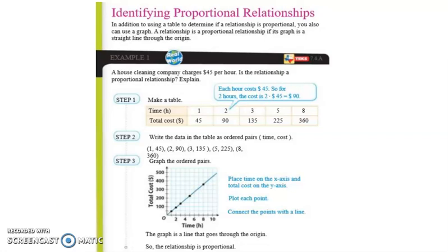Now, 7.4a talks about how we can represent a constant rate of change in mathematical and real-world problems given pictorial, tabular, verbal, numeric, graphical, and algebraic representations, including such examples as the distance formula, which is distance will equal a rate times an amount of time.